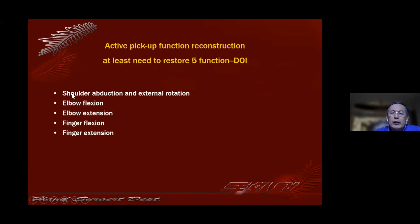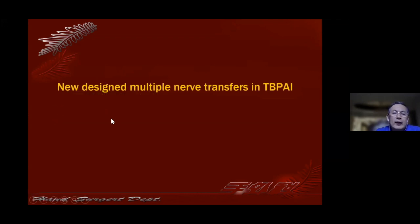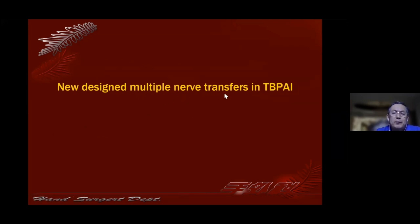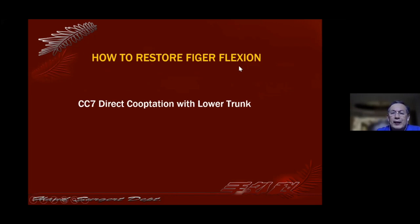You should plan to repair these five functions before you do the operation. Otherwise there is no use for the hand. For children with total brachial plexus injury, we usually use nerve transfer. To restore finger flexion, we use the contralateral C7 to directly repair the lower trunk through the pre-spinal route.